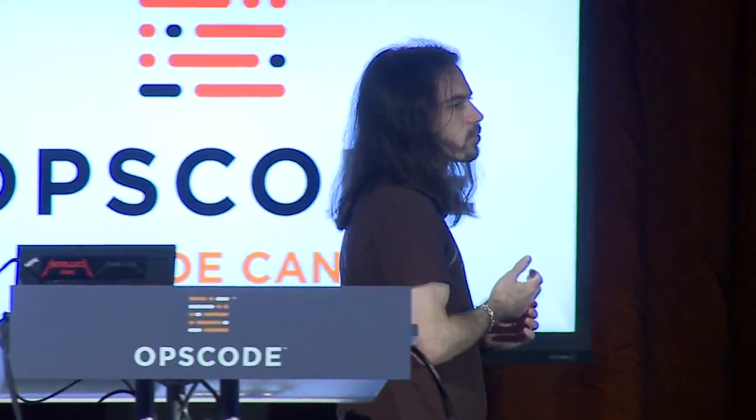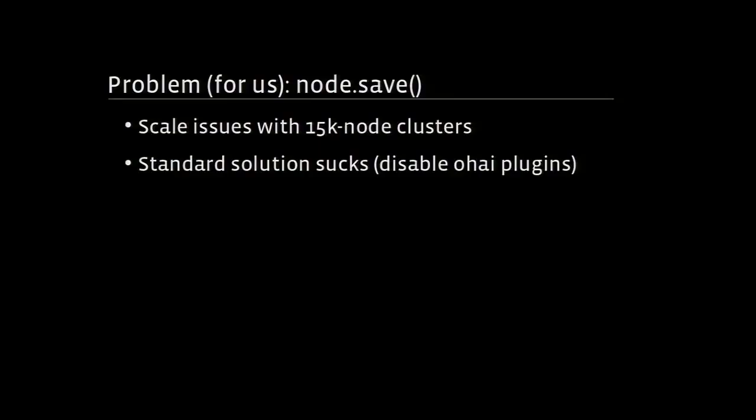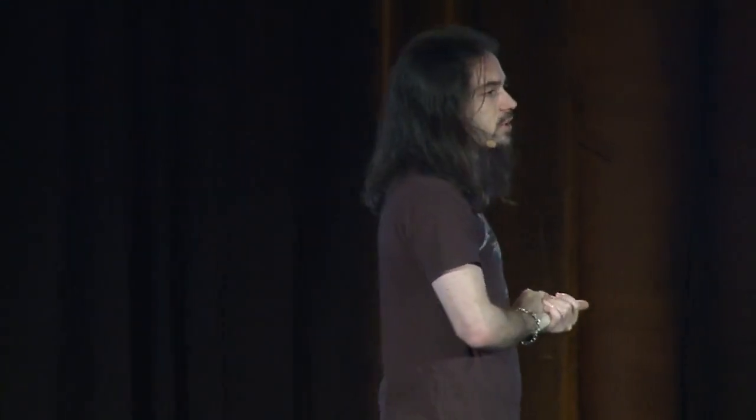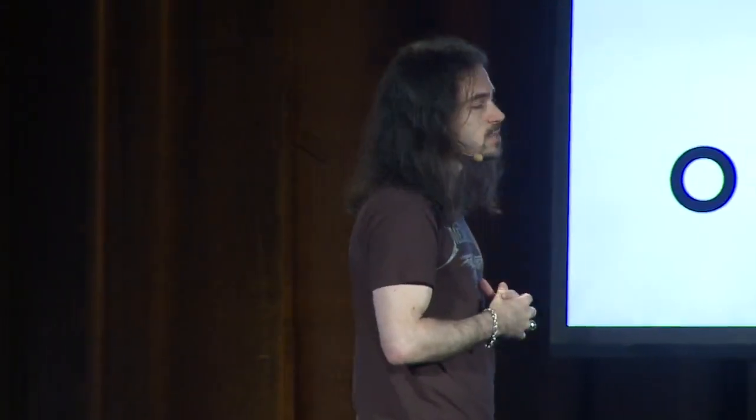For us, one of the biggest problems we were going to run into was node save. At the end of every Chef run, it calls node.save, which takes your entire node object — all the attributes, everything Ohai discovered, resources updated, time taken — and shoves it up to the Chef server. If you're a small company or don't have your own inventory management system, voilà, you have an inventory management system for free. And that's awesome.